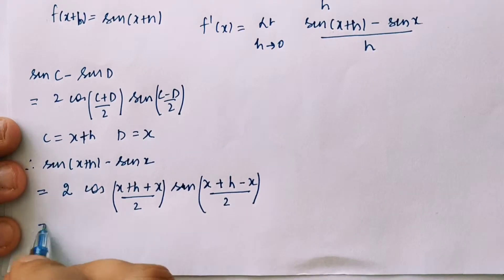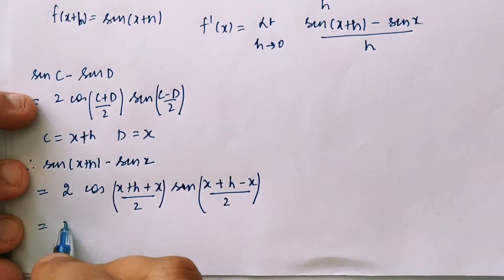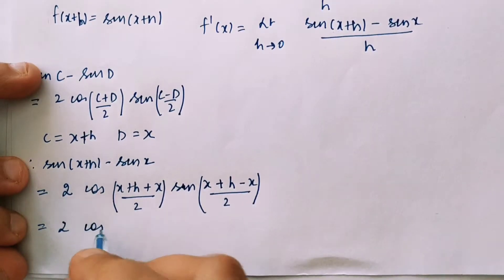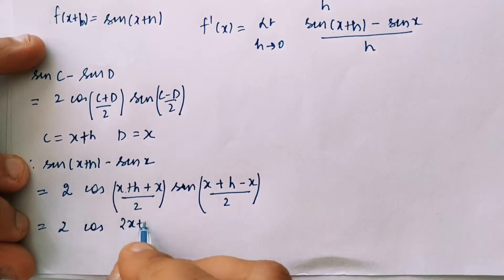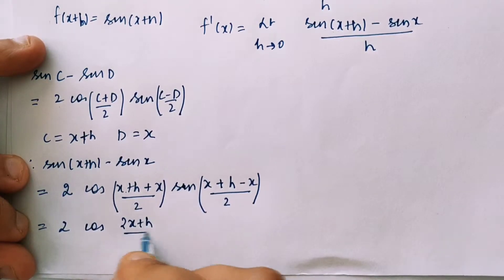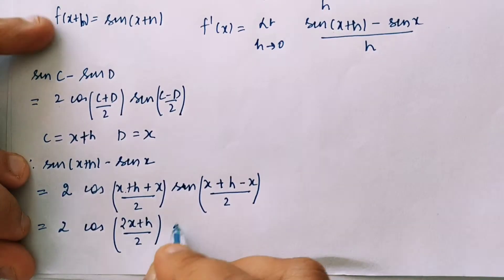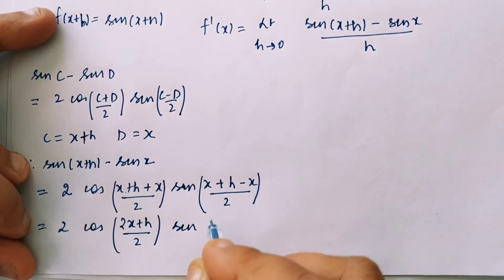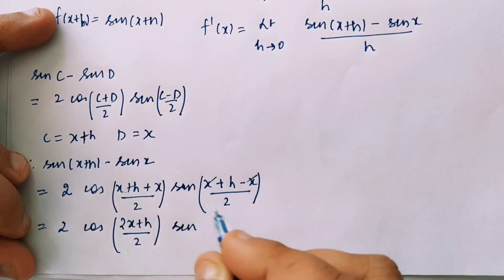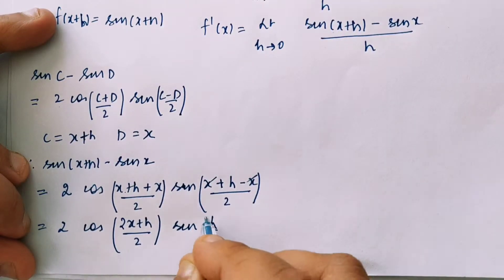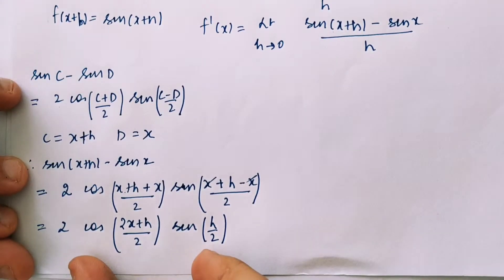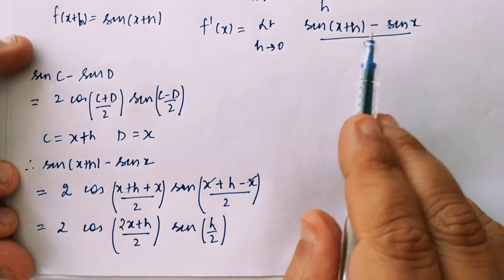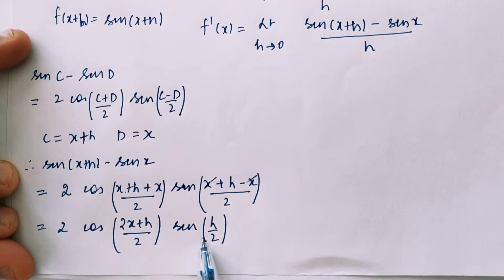Now we can simplify this further. So 2 cos((2x+h)/2) — the x terms give 2x — and for the sin term, x cancels out, so only h/2 remains: sin(h/2). I will use this value of sin(x+h) minus sin x from here.